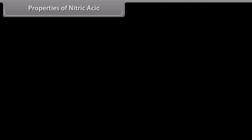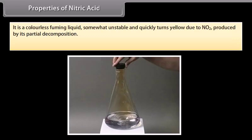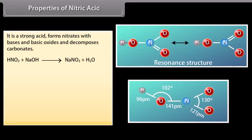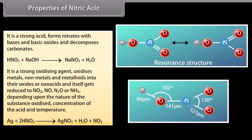Nitric acid is a colorless fuming liquid, somewhat unstable, quickly turning yellow due to NO2 from partial decomposition. It has corrosive action on skin, turning it yellow. It is a strong acid, forming nitrates with bases and basic oxides and decomposing carbonates. It is a strong oxidizing agent, oxidizing metals, non-metals and metalloids into their oxides or oxoacids, while itself getting reduced to NO2, NO, N2O or NH3 depending on the substance oxidized, acid concentration, and temperature.